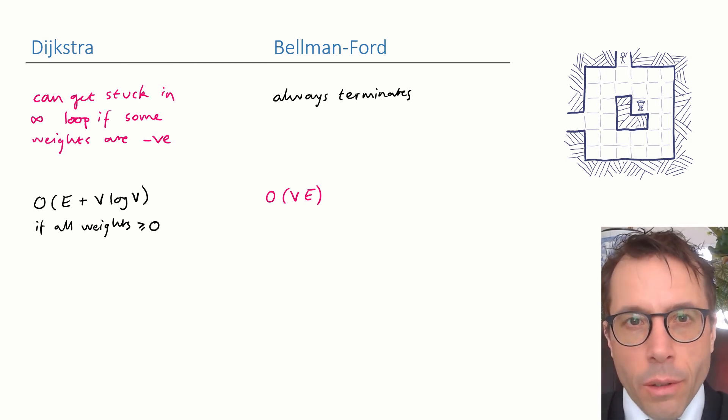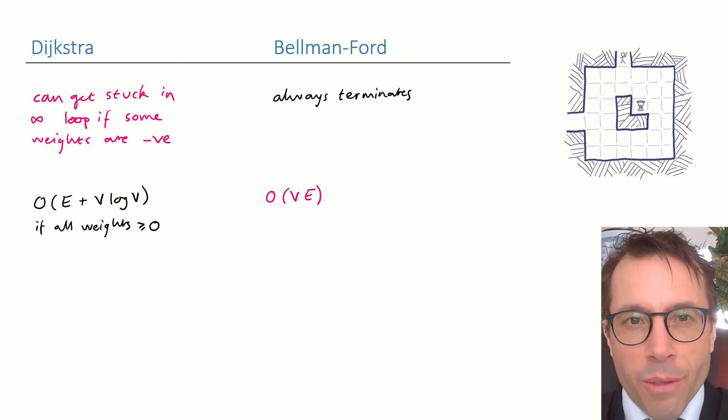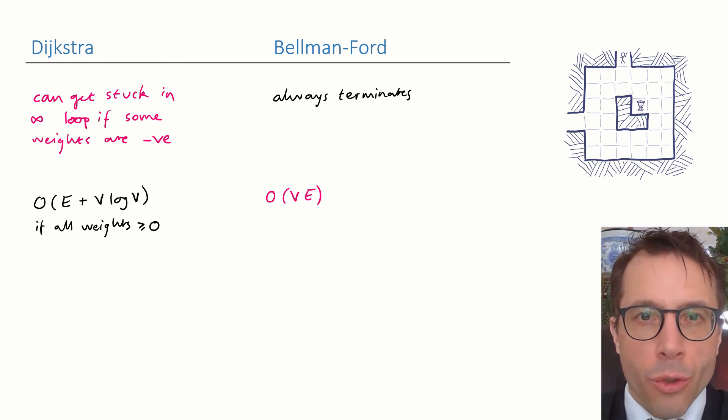The Dijkstra running time is better. Think of a tree, for example, where E equals V minus 1, which would make Dijkstra take time big O of V log V, but Bellman-Ford would be big O of V squared. And the bigger E is, the worse Bellman-Ford gets. That's just the price you pay for being able to deal with negative edge weights.